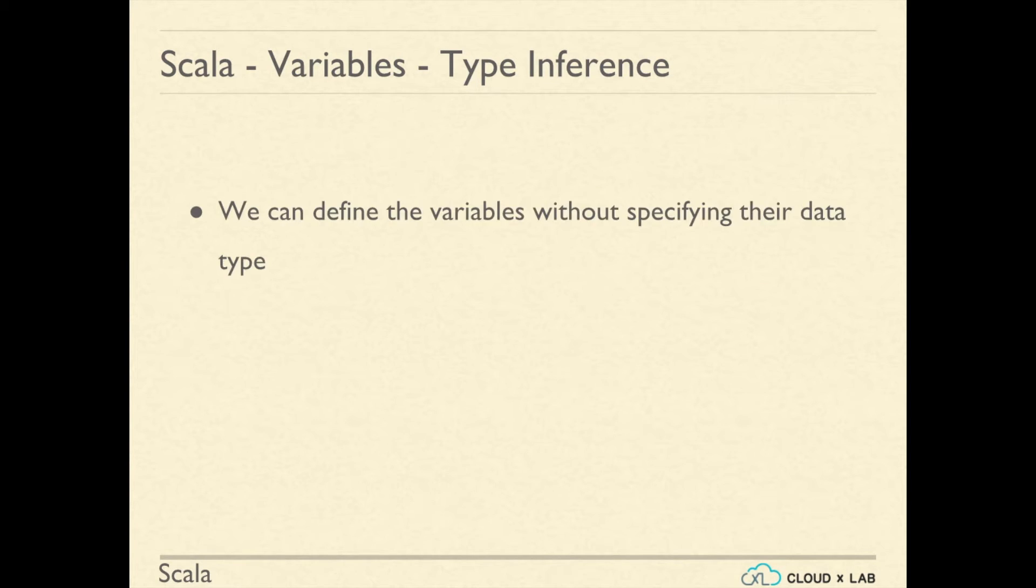In Scala, we can define variables without specifying their data type. The Scala compiler can understand the type of the variable based on the value assigned to it. This is called variable type inference.